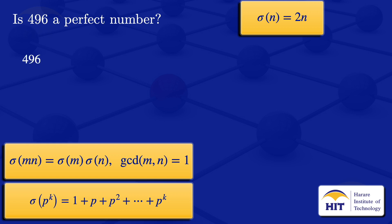Looking at 496, it is not of the form of a prime, so we try to write it in terms of its prime factors. We have 2 times 2 times 2 times 2 times 31, which we can write as 2 to the power 4 times 31.